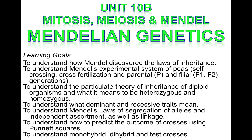Our learning goals are to understand how Mendel discovered the laws of inheritance, to understand Mendel's experimental system of peas including self-crossing, cross-fertilization, and parental and filial generations, to understand the particulate theory of inheritance of diploid organisms and what it means to be heterozygous and homozygous, to understand what dominant and recessive traits mean, to understand Mendel's laws of segregation of alleles and independent assortment as well as linkage, to understand how to predict the outcome of crosses using Punnett squares, and to understand monohybrid, dihybrid, and test crosses.